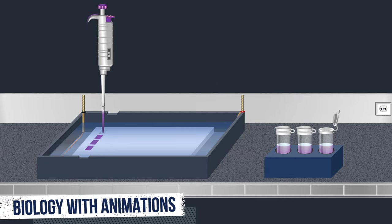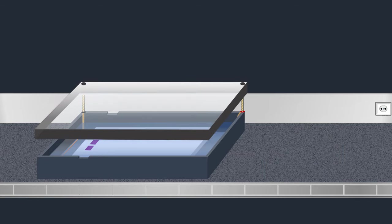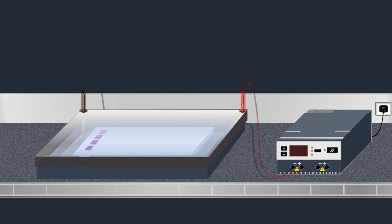Then an electric current is applied to pull the samples through the gel. Based on their charge and size, the molecules will travel through the gel at different speeds, allowing them to be separated from one another.